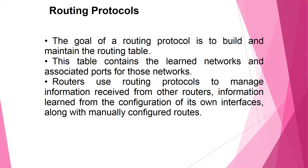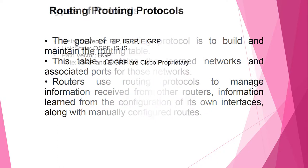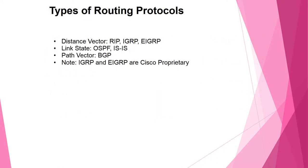The goal of a routing protocol is to build and maintain the routing table. This table contains learned networks and associated paths. Routers use routing protocols to manage information distributed from other routers, information learned from their own interface configurations, and manually configured routes. Routing protocols include distance vector types such as RIP, IGRP, and EIGRP; link state types such as OSPF and IS-IS; and path vector protocols such as BGP. Note: IGRP and EIGRP are Cisco proprietary.